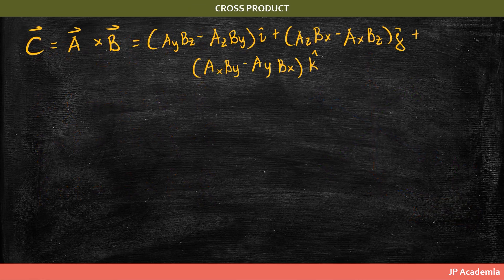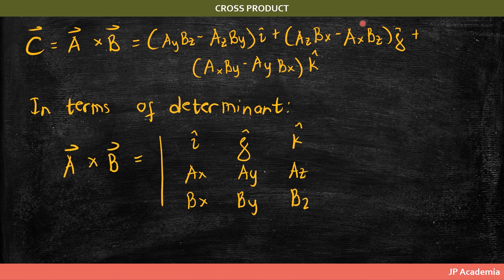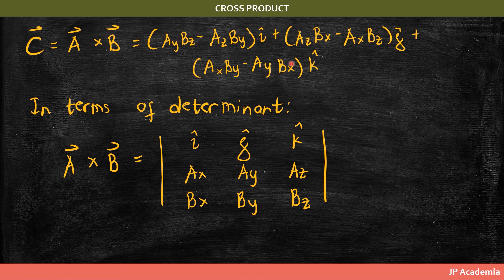Using those relations, we can get vector C equal to the cross product of vector A with vector B in terms of components. For those familiar with basic linear algebra, this can also be expressed as a determinant. Following the pattern for getting the determinant, the x component is A sub y times B sub z minus A sub z times B sub y; the y component (j hat) is A sub z times B sub x minus A sub x times B sub z; and the z component follows the same pattern. And that's it for this video lecture.